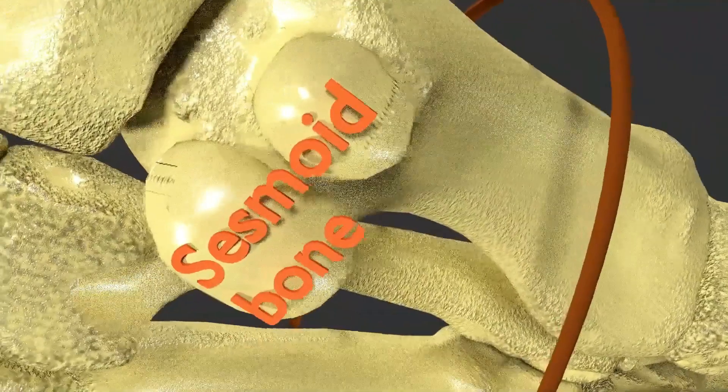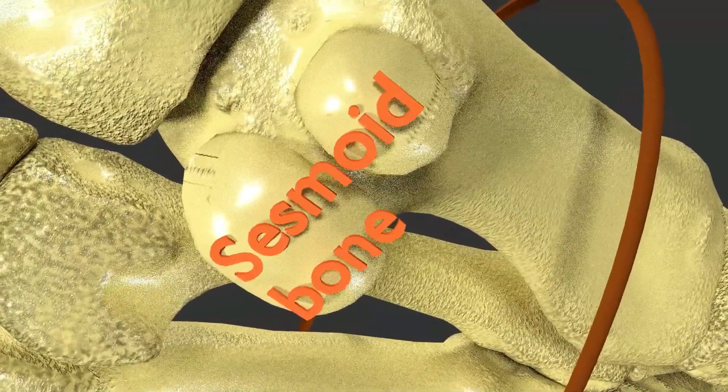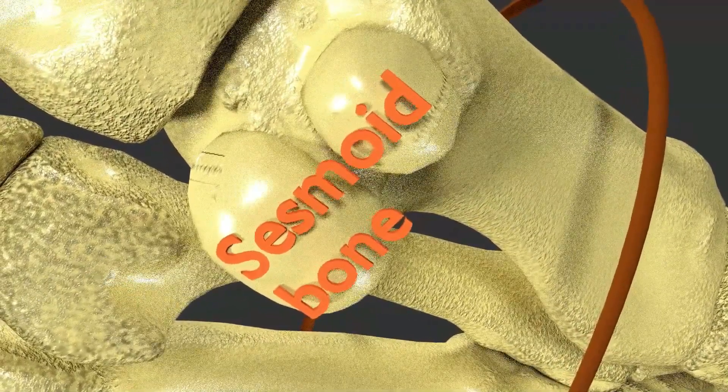Now you see the two sesamoid small bones below the first metatarsal bone of the foot.